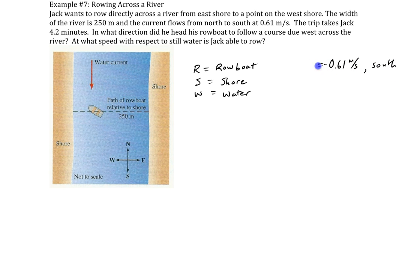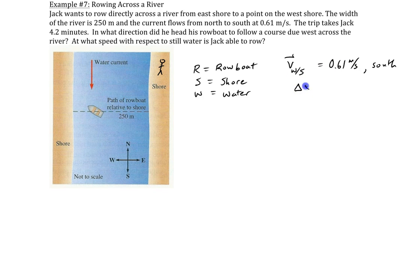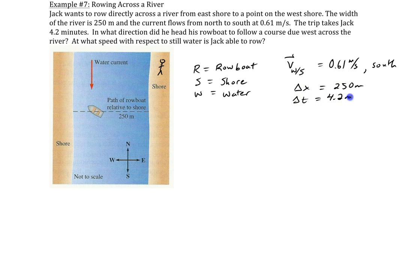That would be the velocity of the water relative to the shore. If someone was standing along the shore and observing the water go by, they would be seeing it going at that velocity. We're also given a displacement of 250 meters — I'll call that delta x, since it's along the x-axis — and a time of 4.2 minutes.